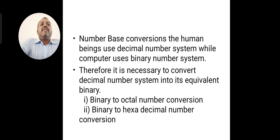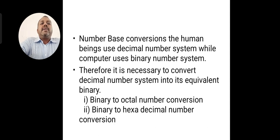Number base conversion: human beings use the decimal number system, while computers use the binary number system — that is, zeros and ones. The machine code of a computer or personal computer is represented by zeros and ones. Therefore, it is necessary to convert the decimal number system into the equivalent binary number system. Here, we are going to discuss binary to octal number conversion and binary to hexadecimal number system conversion.